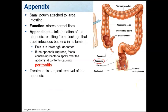The appendix is attached to the large intestine. It's a small pouch whose function is to store normal, non-pathogenic bacteria. You might have heard of the appendix as a vestigial organ, meaning it has no function in humans and can be removed without adverse effects. However, scientists are on the fence as to whether it's truly vestigial — they think it does play a role in our immune system.